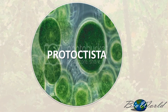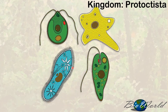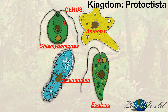I'm sure you will be familiar with some of the members of kingdom protoctista. This includes the amoeba, paramecium, the chlamydomonas, and the euglena, just to name a few. The names I mentioned are actually genus names, so they are scientific. This means when you write these names down, please remember to underline them.